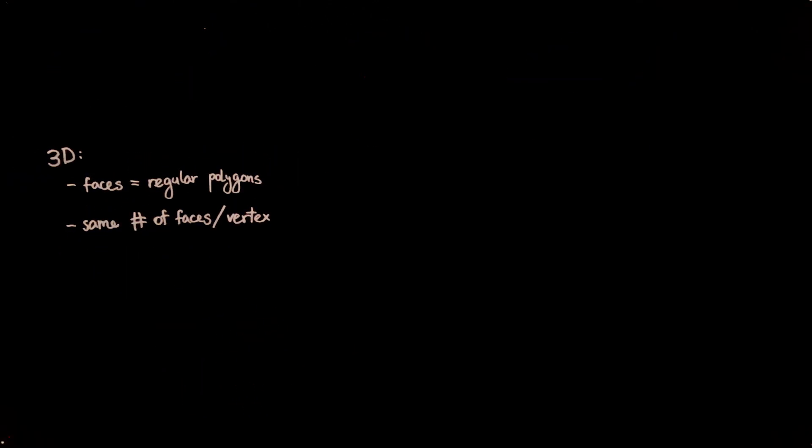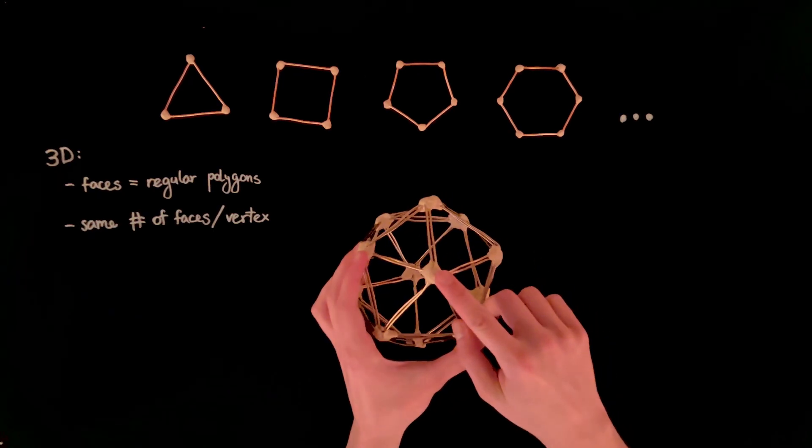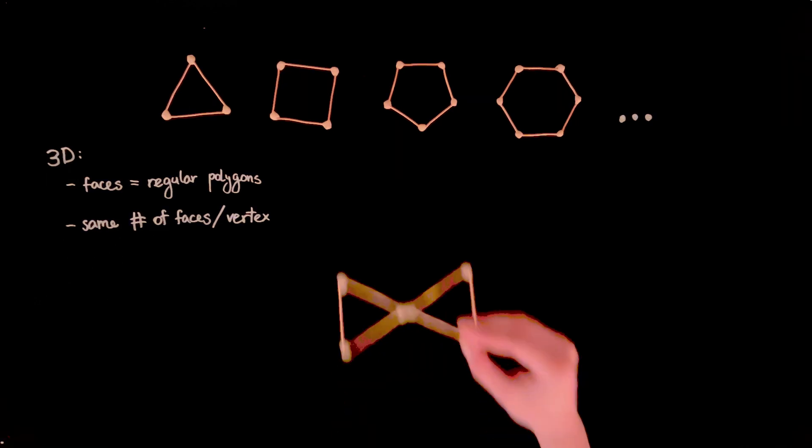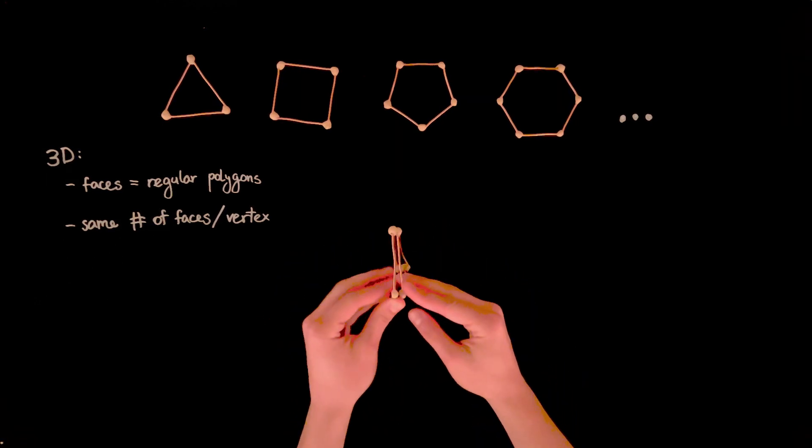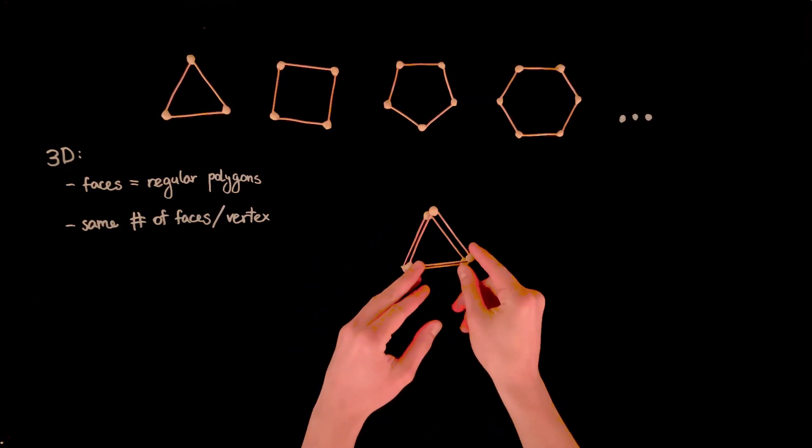Consider our building blocks. The equilateral triangle, the square, the regular pentagon, hexagon, and so on. Although there is no end to our options, only a few of them assemble into polyhedra. Can you see why? If a platonic solid exists, we shouldn't be able to design a flat version of its vertex that folds up into 3D space. Two polygons would snap flat on their own. So every respectable vertex has at least three faces.